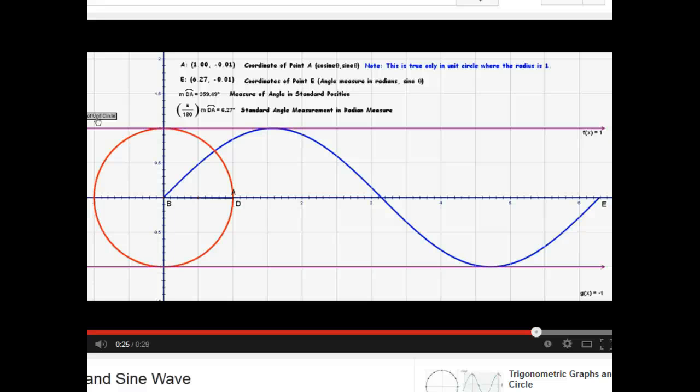And now, also notice that if we continue to sweep A around and around the unit circle, we'd see that sine theta is periodic with a period of 2 pi. Note that the x coordinate here is greater than 6, and in fact, it's 2 pi.